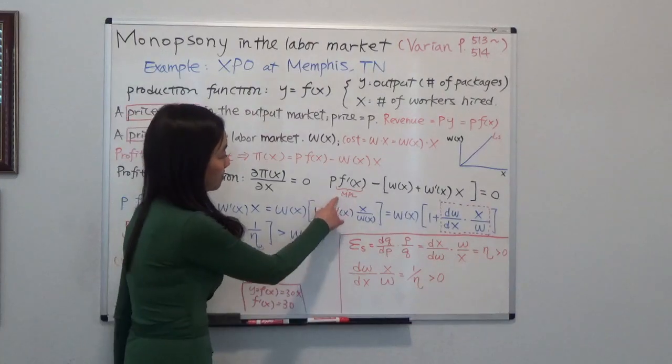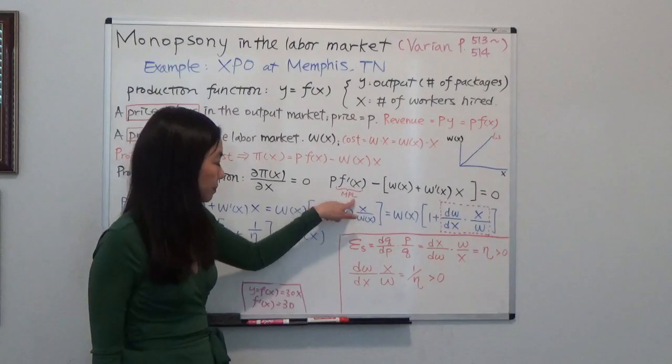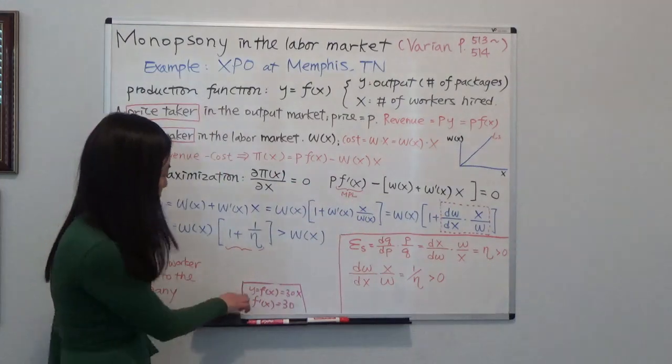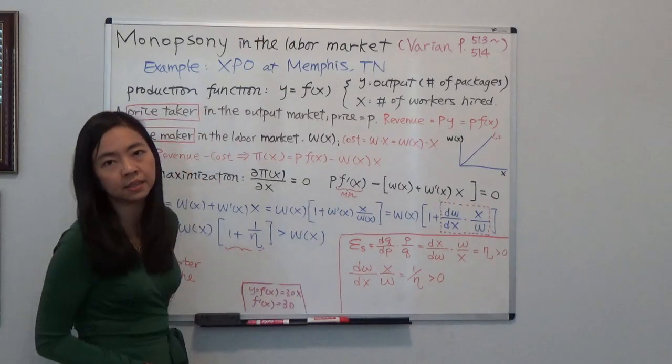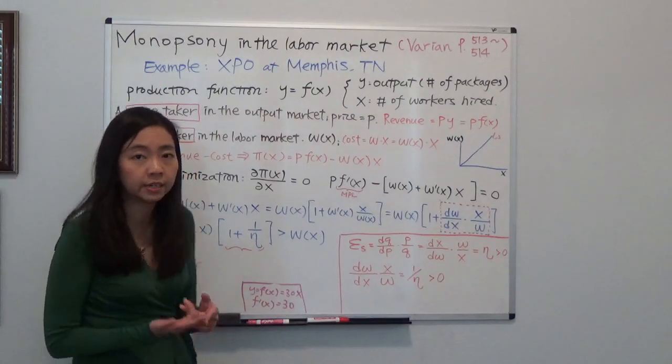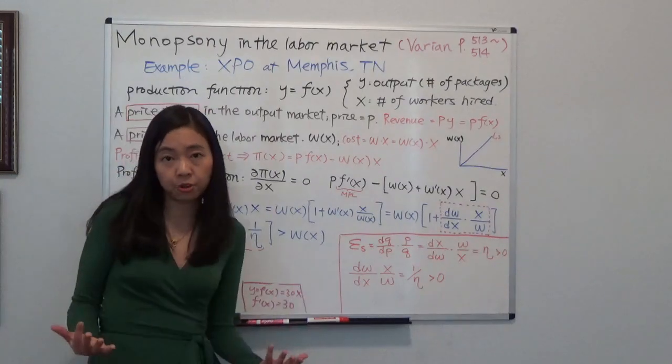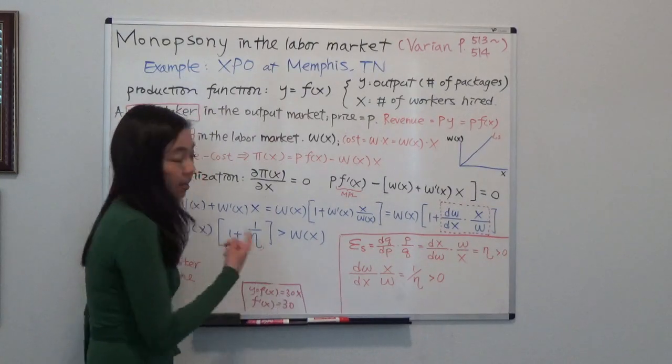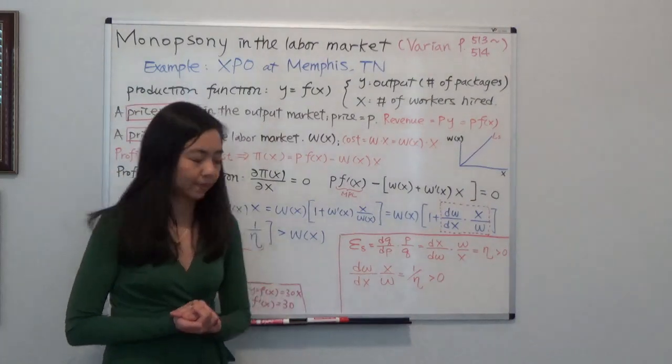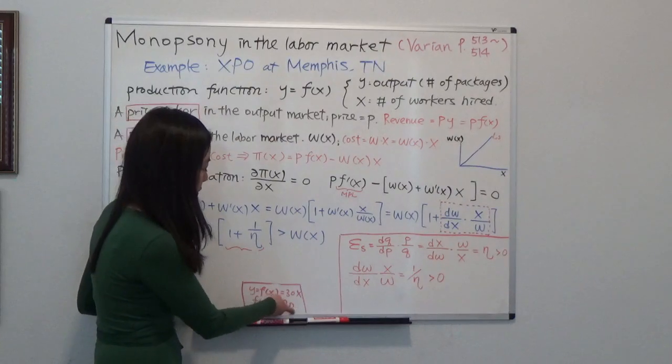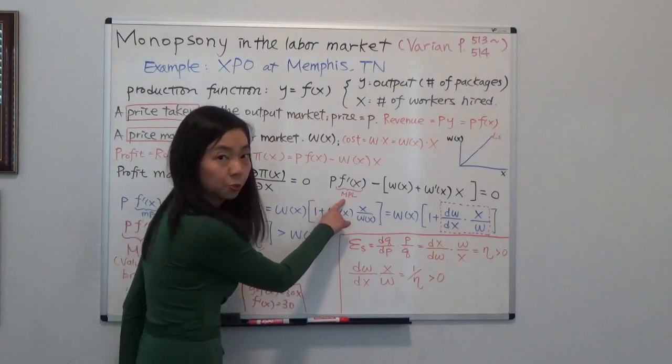Notice that when you take the derivative of the production function, you get the marginal product of labor. So just an example, if your production function Y is equal to F(X), which is equal to 30 times X, that means in, say, each hour, each worker is going to pack 30 packs for you, 30 packages. And if you take the derivative of that with respect to X, then you will get the productivity of the worker. So that will be 30. That means the number of packages they can pack, that will be 30. So you know that F'(X) really is the marginal product of labor.